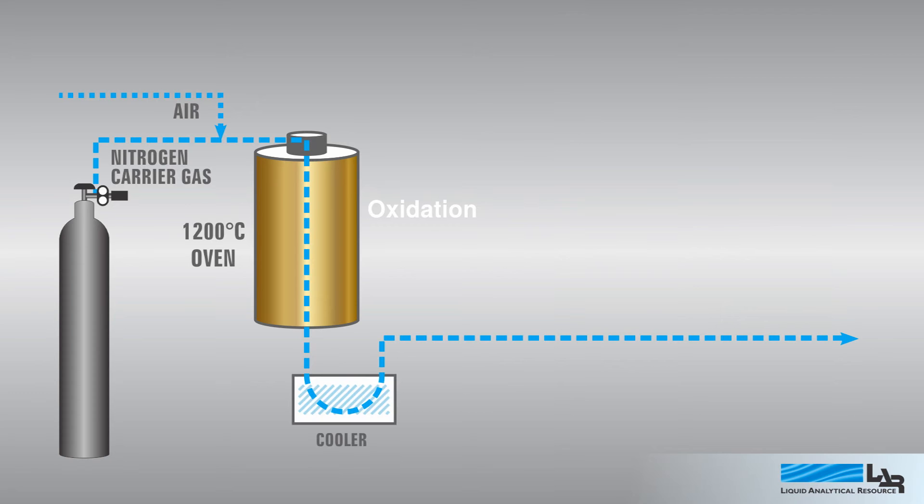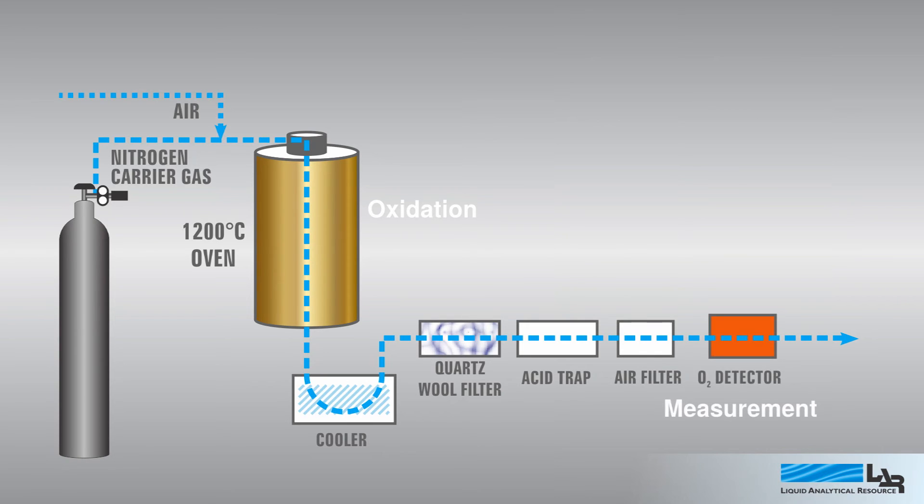The gas is then cooled and sent through a quartz filter, an acid trap, and an air filter. Before exiting the analyzer, the gas passes through a zirconium O2 detector, which continuously measures the O2 level in the gas stream.